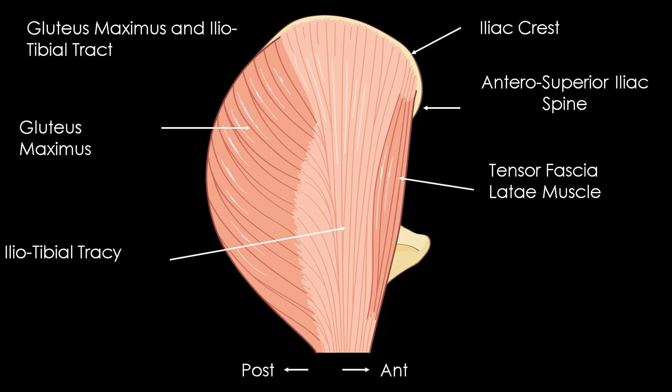The iliotibial tract is a fibrous reinforcement from the lateral aspect of the gluteal fascia of the buttock and fascia latae of the thigh. It originates from the lateral side of the iliac crest where it is slightly thickened, then extends downwards to cover the gluteus medius muscle and the lateral face of the greater trochanter, from which it is separated by the trochanteric bursa. The superficial fibres of the gluteus maximus are inserted behind, and the lower fibres of the tensor fasciae latae are inserted anteriorly. It is inserted on the infracondylar tubercle of Gerdy on the lateral side of the tibia. The tensor muscle of the fascia latae is the most anterior muscle of the lateral region of the hip.